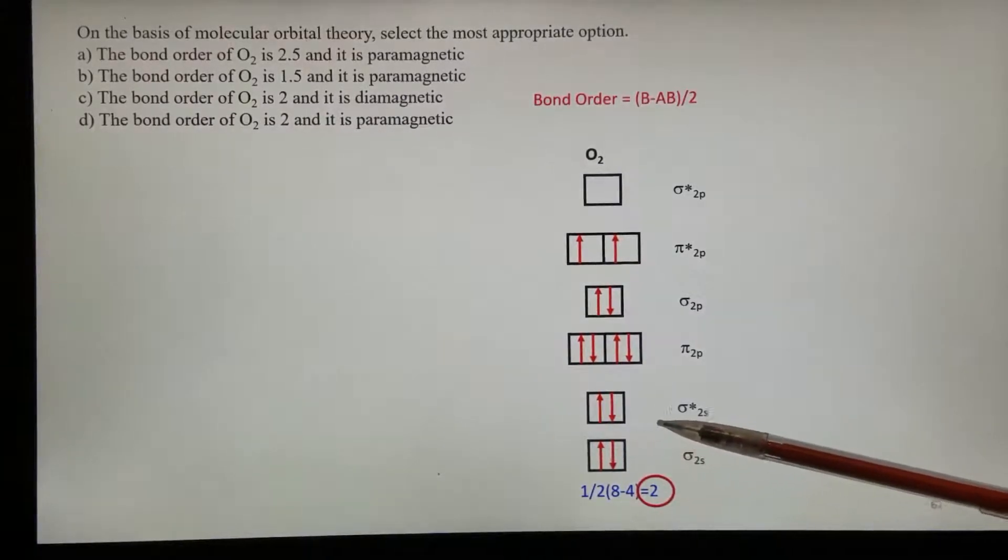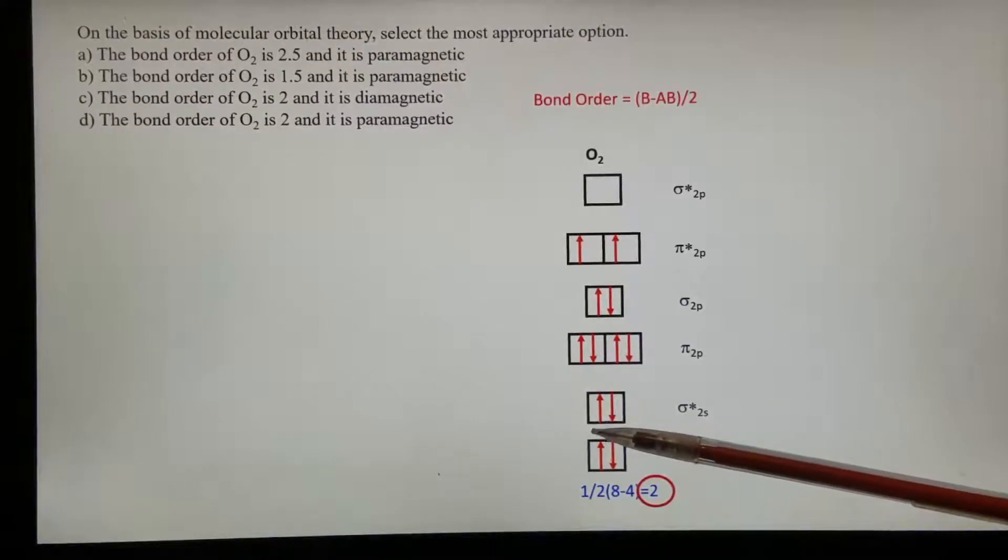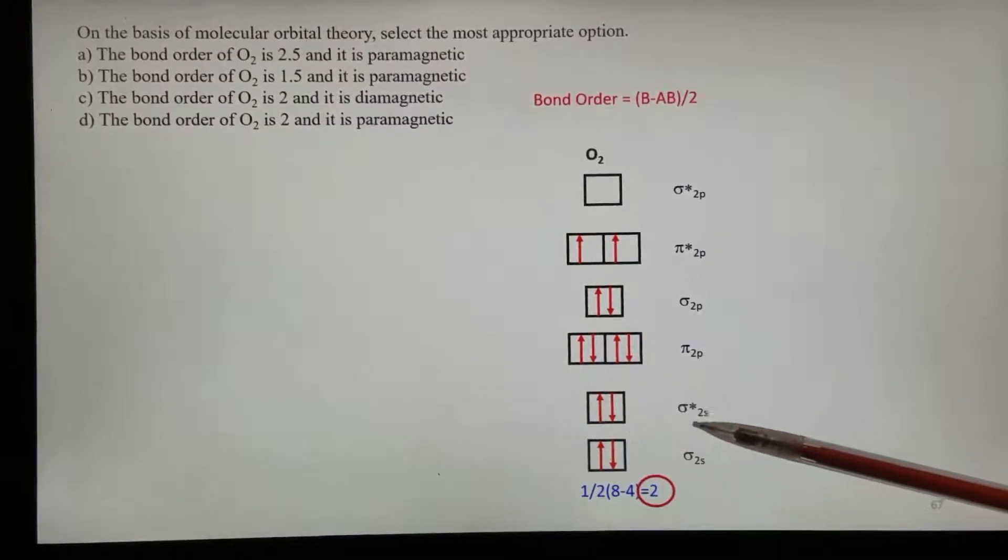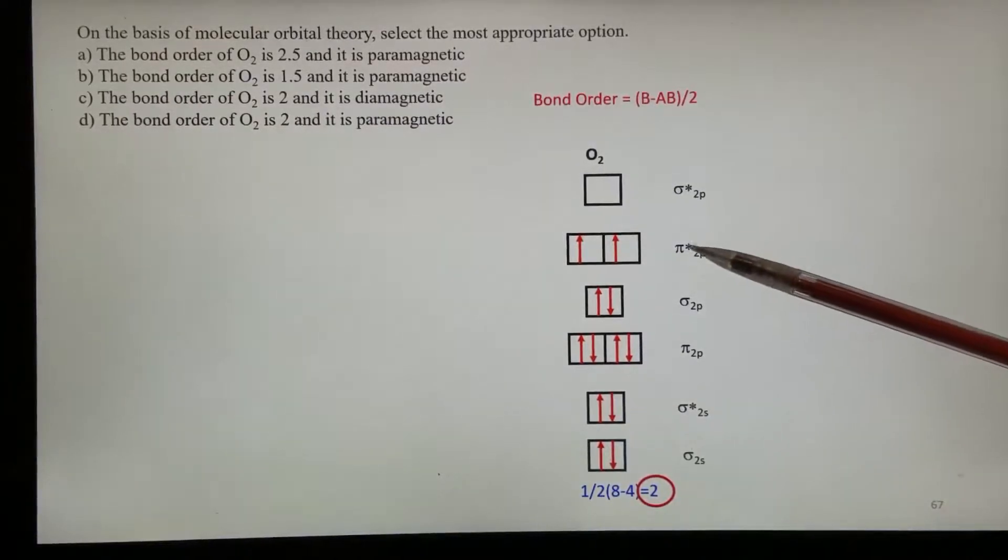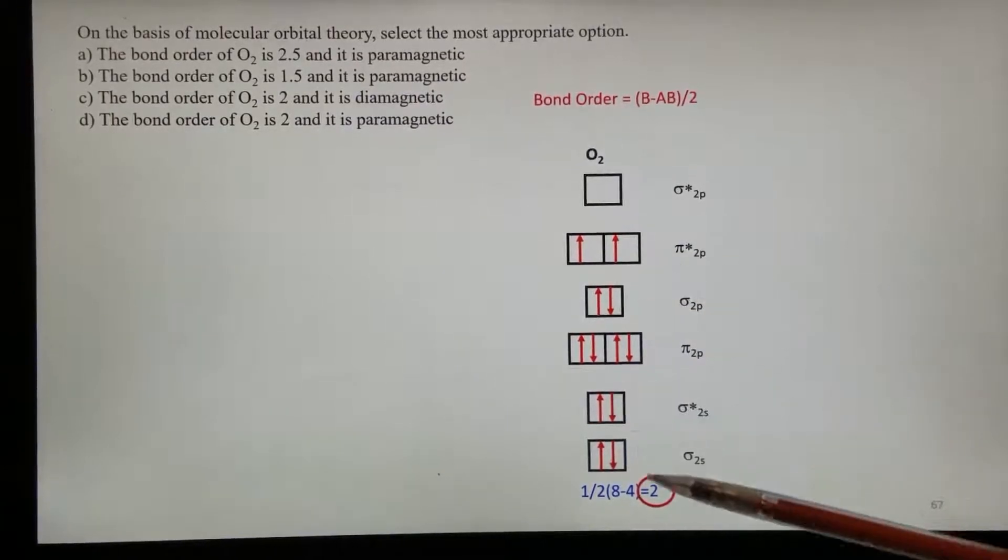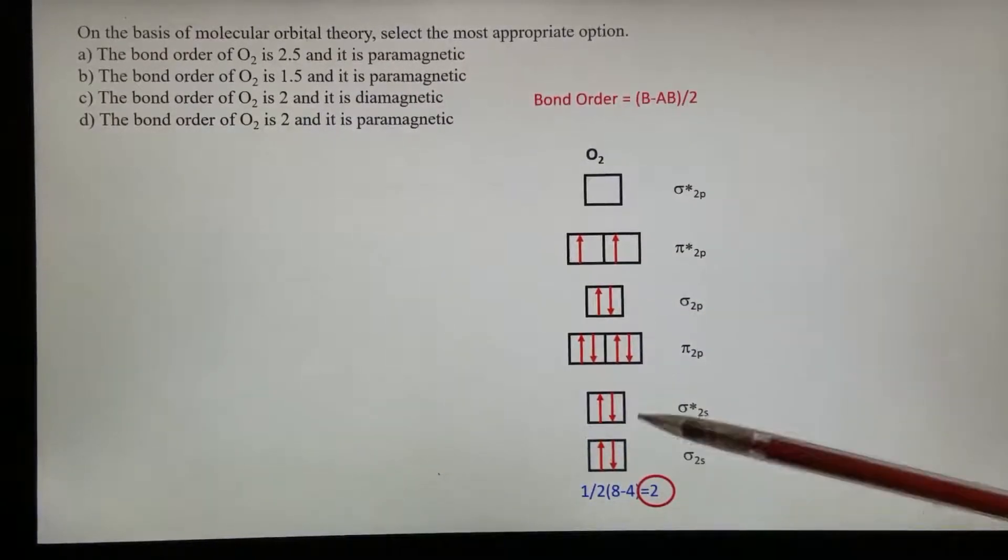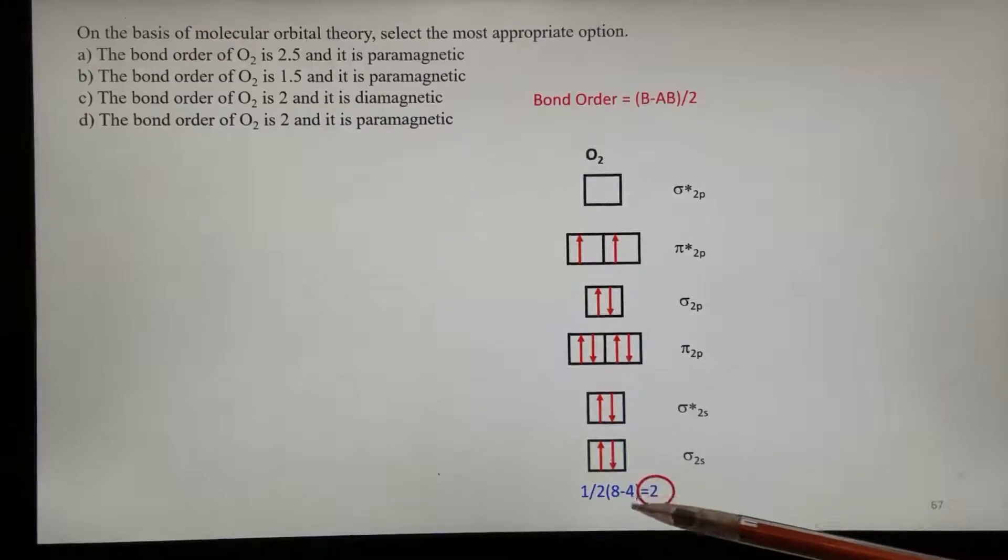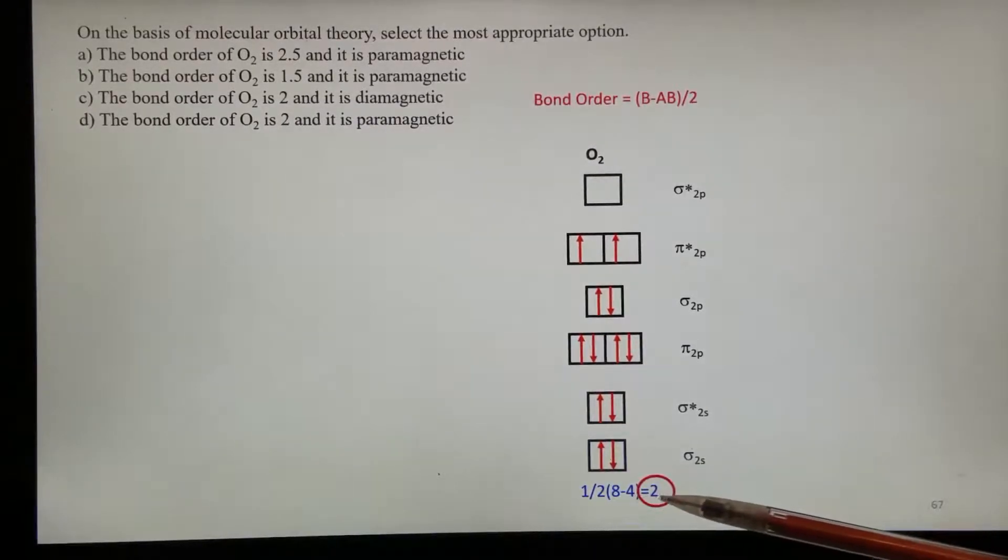Anti-bonding: we have this orbital, sigma 2s anti-bonding orbital, and pi 2p anti-bonding orbital. Total of 4 anti-bonding electrons. 8 minus 4 equals 4 divided by 2. The bond order is 2.